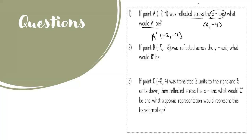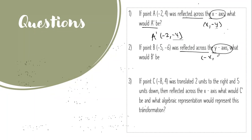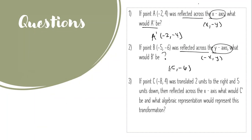Don't be afraid to speak up — advocate for yourself and your learning. Question two: if point B was at (-5, -6) and was reflected across the y-axis — the y-axis rule is x changes signs, y stays the same — what would B prime be? Perfect: (5, -6). The x changes sign so negative five becomes positive five, and y stays the same.